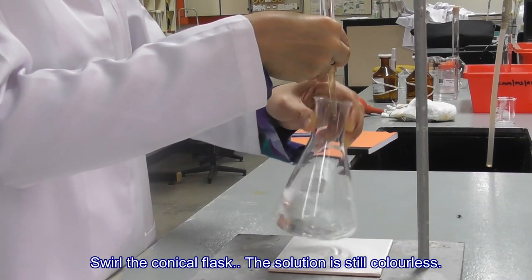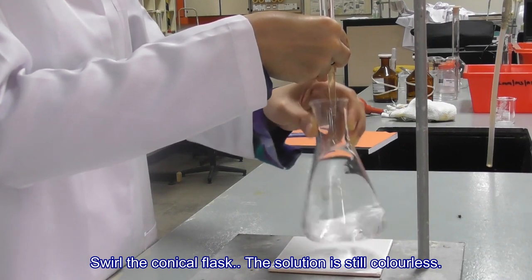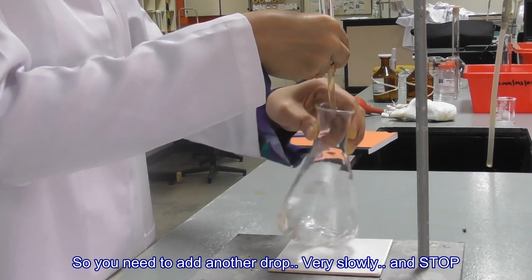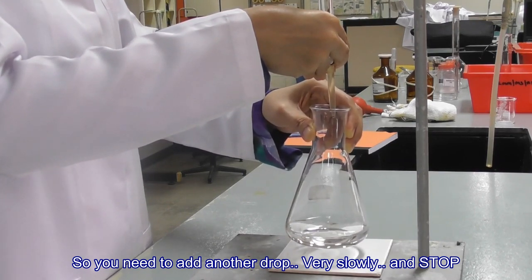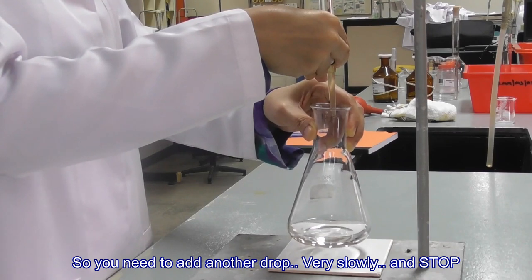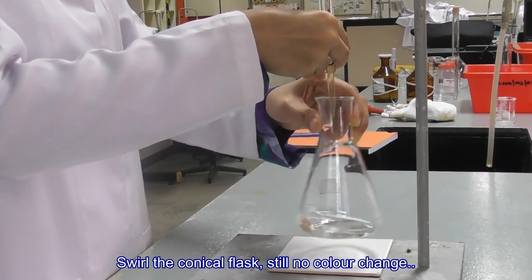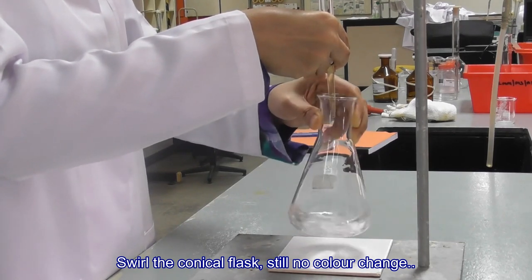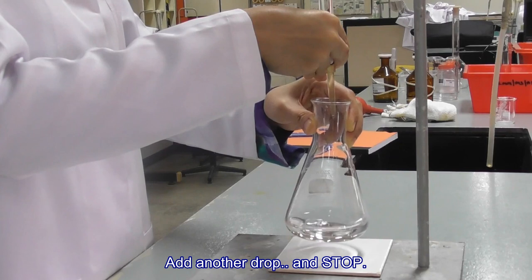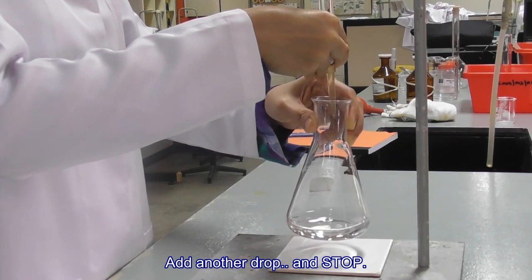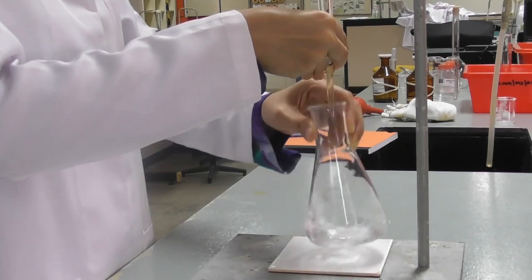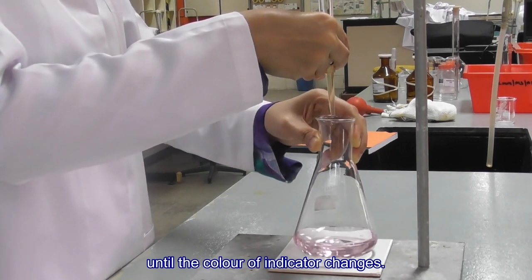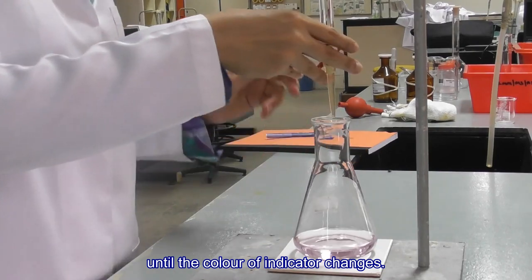Swirl the conical flask. The solution is still colorless, so you need to add another drop. Very slowly, and stop. Swirl the conical flask. Still no color change. Add another drop and stop. You may need to repeat this several times until the color of indicator changes.